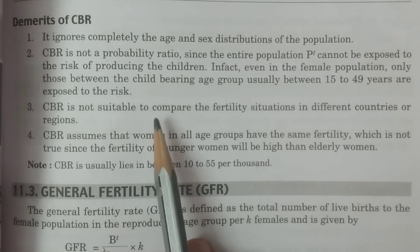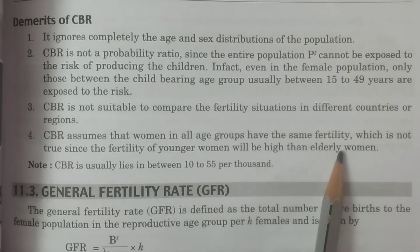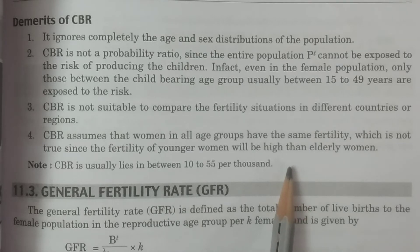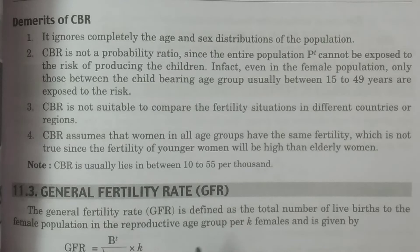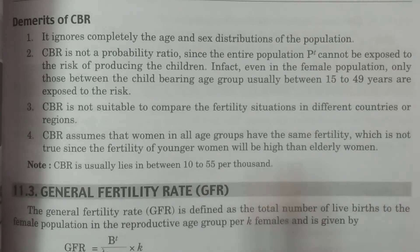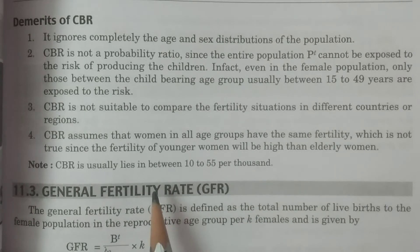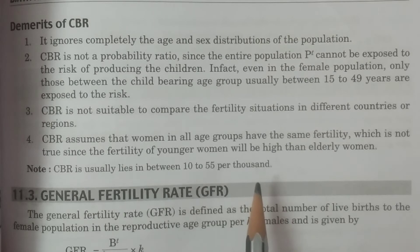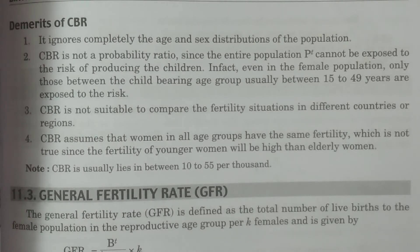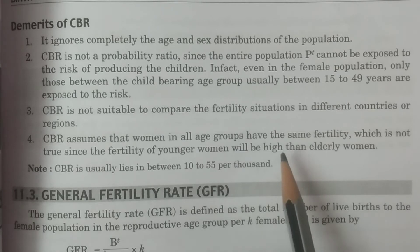The fourth demerit is that CBR assumes that women in all age groups have the same fertility. This is not true, since the fertility of younger women is higher than that of older women. Younger women have a higher risk of producing children, whereas elderly women have less fertility. The same fertility rate cannot be expected across all age groups — this is a key drawback of CBR.